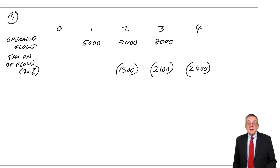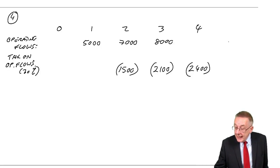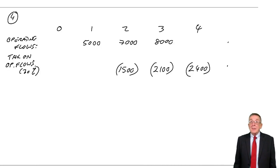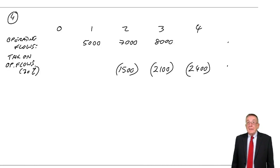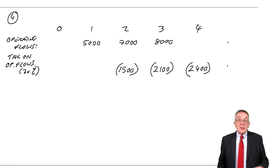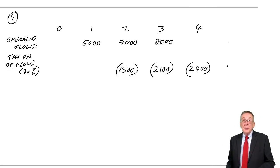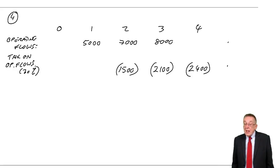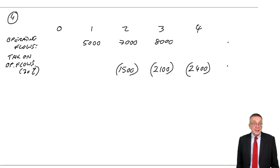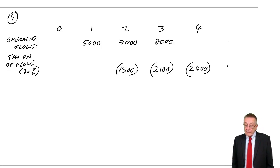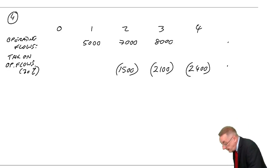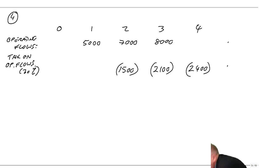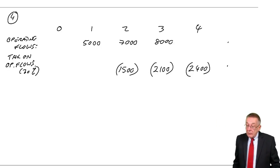When these long-form questions are marked, each line is marked separately — it may be half a mark, one mark, or two marks. Whatever's coming later, those two lines — operating flows and the tax on them — are desperately easy marks to pick up.